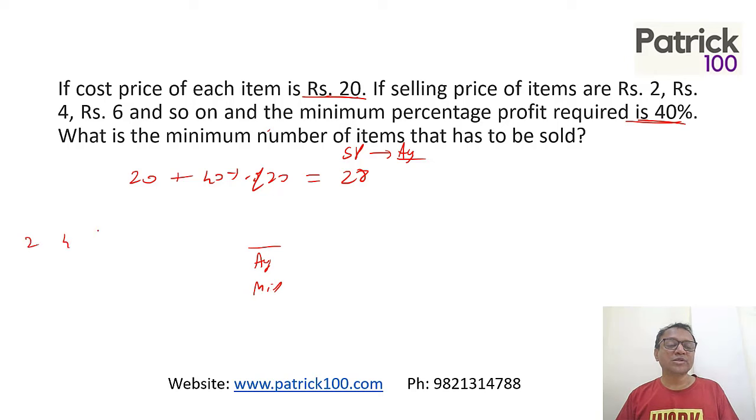So if you have 2, 4, 6, etc., the middle term is 28. Also, the average is nothing but first term plus last term divided by 2.